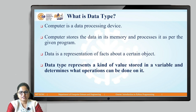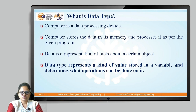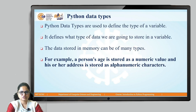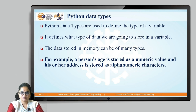A data type is defined as: it represents the kind of value that is going to be stored in a variable, and it also determines what kind of operations we can perform on it. It defines what kind of value we are going to store and the operations we can perform on the data type. Python data types are used to define the type of a variable.